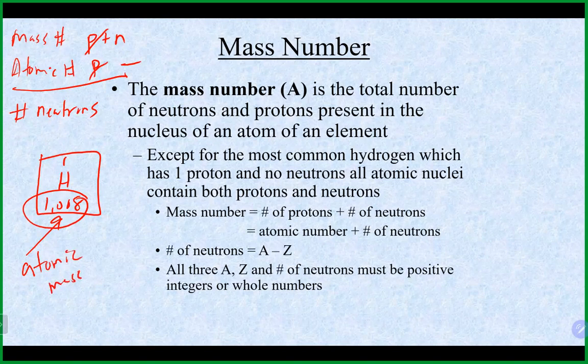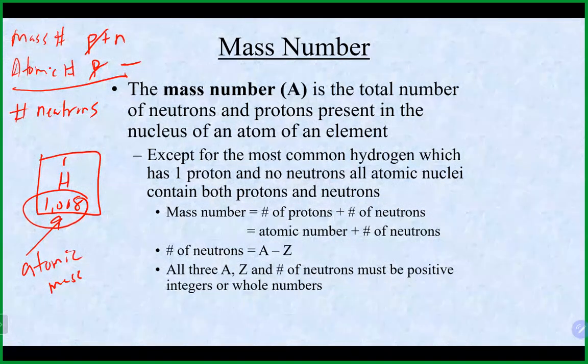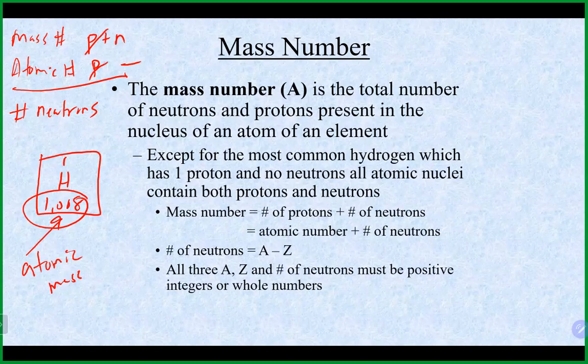What confuses people is that these numbers are very close to each other, but the mass number must be a whole number. If asked to calculate the mass number, you'll be given enough information to do so and it should be a whole number — do not use the number from the periodic table. The atomic mass is actually the average atomic mass of all naturally occurring isotopes.